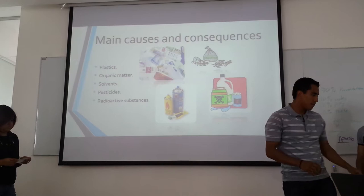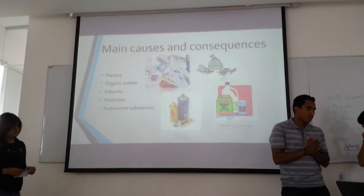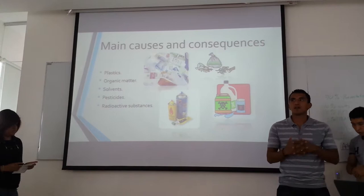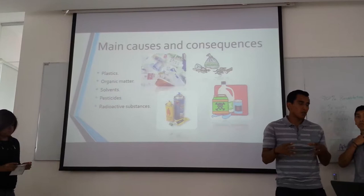Land pollution also damages landscapes, as toxic substances kill or affect some kinds of plants or animals. It also affects vegetables because the soil is already contaminated and the food that grows in it becomes contaminated too.